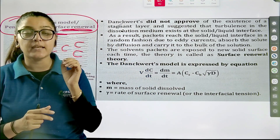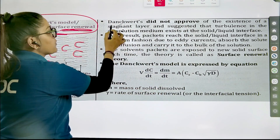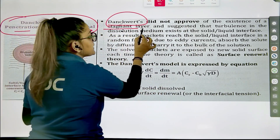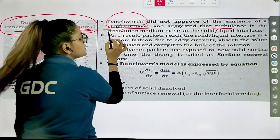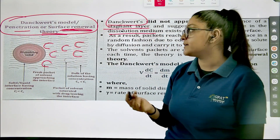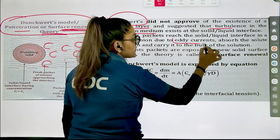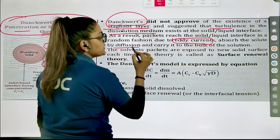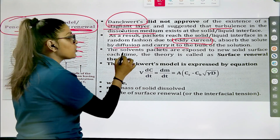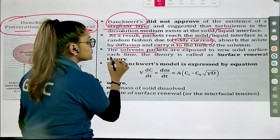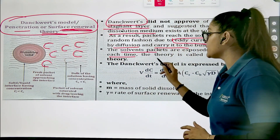There is again and again surface renewal taking place — a fresh pocket of solvent comes, takes the drug with it. There is no assumption of a stagnant layer, unlike the film theory. The Danckwerts model does not approve any existence of the stagnant layer. He suggested that turbulence in the dissolution media exists at the solid-liquid interface, which generates eddy currents. These eddy currents carry bulk solvent into pockets that expose to a new solid surface each time — that is why we say the surface has been renewed.